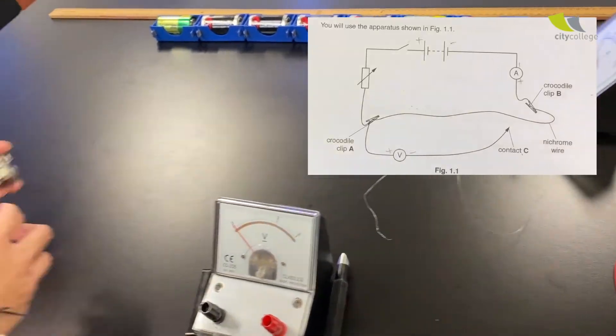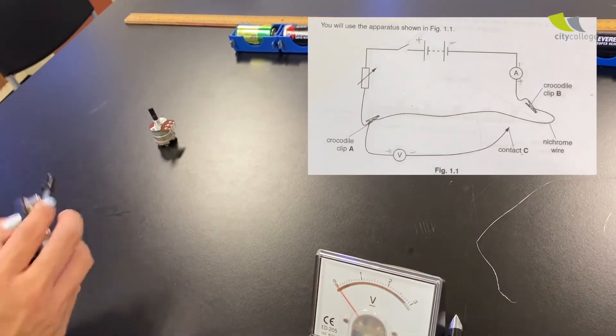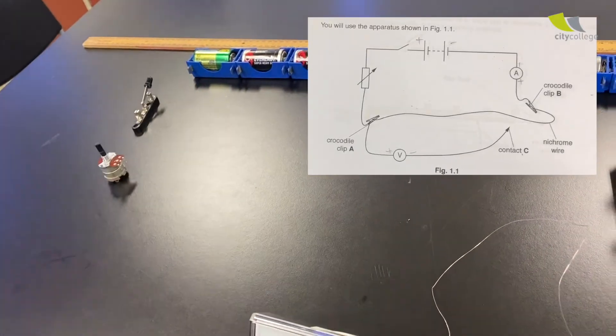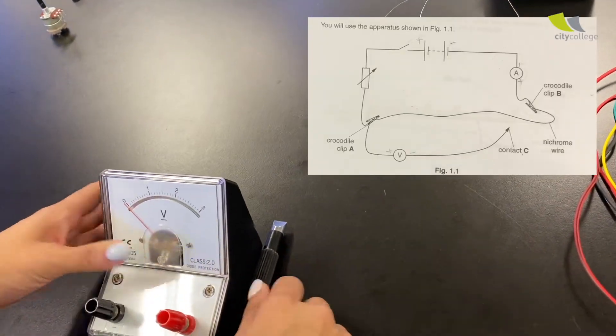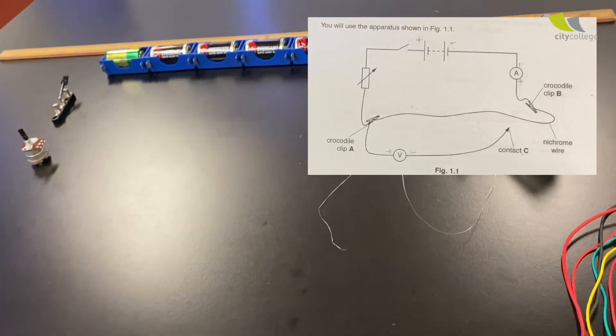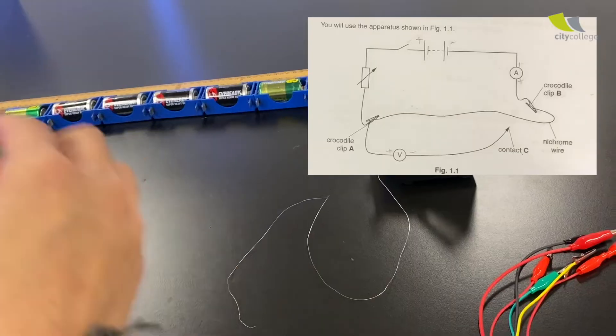Alright. Then after that, you have your variable resistor, followed by a switch. And the voltmeter and the jockey is a parallel circuit. So you just put it at the bottom. Okay. Then, right now you connect the wires in a clockwise manner.